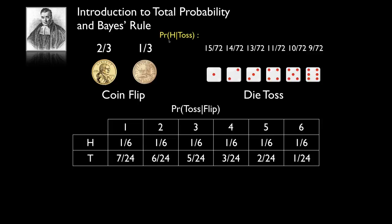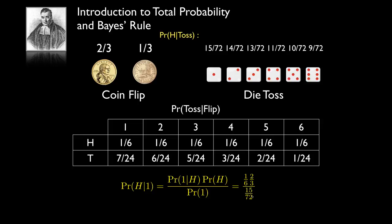Now let's use Bayes' rule to compute the probability that the coin had shown heads conditioned on the particular die toss we observe. Applying Bayes' rule: the probability of heads given a one on the die toss is the probability of a one given heads times the probability of heads, divided by the total probability of a one. That is one-sixth times two-thirds divided by 15 over 72, which works out to eight-fifteenths.